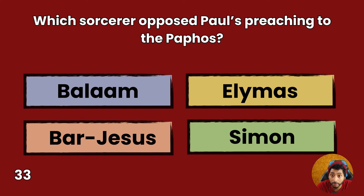Question 33: Which sorcerer opposed Paul's preaching to the Paphos? Balaam, Elymas, Bar-Jesus, or Simon? Answer: Elymas. Acts 13:8 — But Elymas the sorcerer, for so his name is translated, withstood them, seeking to turn the proconsul away from their faith.